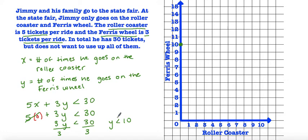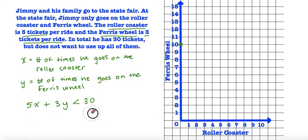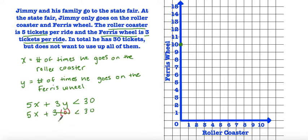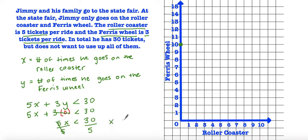Then we find the x-intercept by substituting y for 0. So we have 5x plus 3 times 0 is less than 30. Since 3 times 0 cancels out, we're left with 5x is less than 30. Dividing both sides by 5, we get x is less than 6. So we plot the point (6, 0).